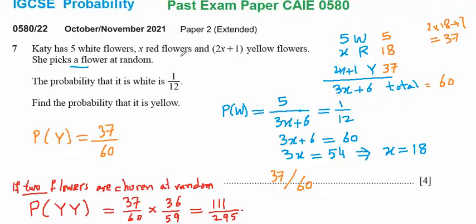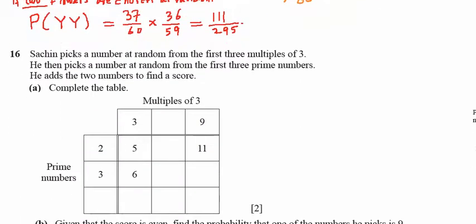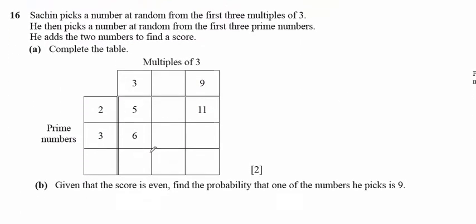Now moving to Question 16 in the same paper — October/November 2021 IGCSE Extended Math. There is a possibility diagram with some values missing. Sachin picks a number at random from the first three multiples of three, then picks a number at random from the first three prime numbers, and adds them to find the score.